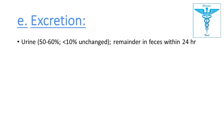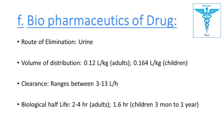The remaining 40 to 50% of the drug is removed from the body through feces within 24 hours. The volume of distribution is 0.12 L/kg in adults and 0.164 L/kg in children. Clearance ranges between 3 to 13 L/hour. Biological half-life in adults is 2 to 4 hours, and in children from 3 months to 1 year it is 1.6 hours.